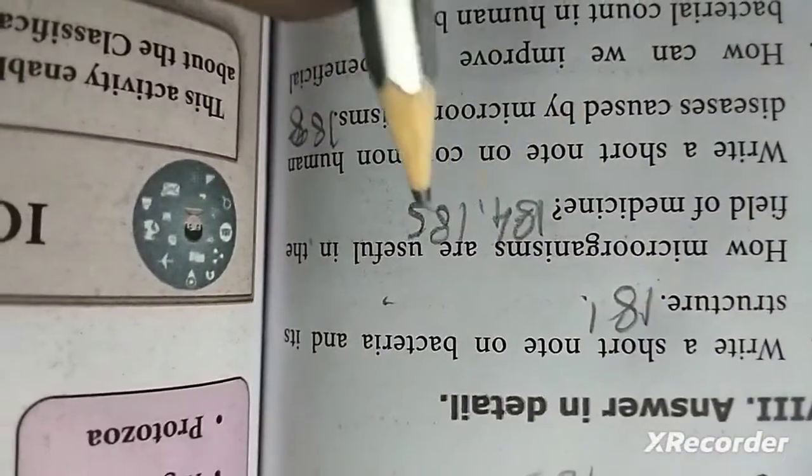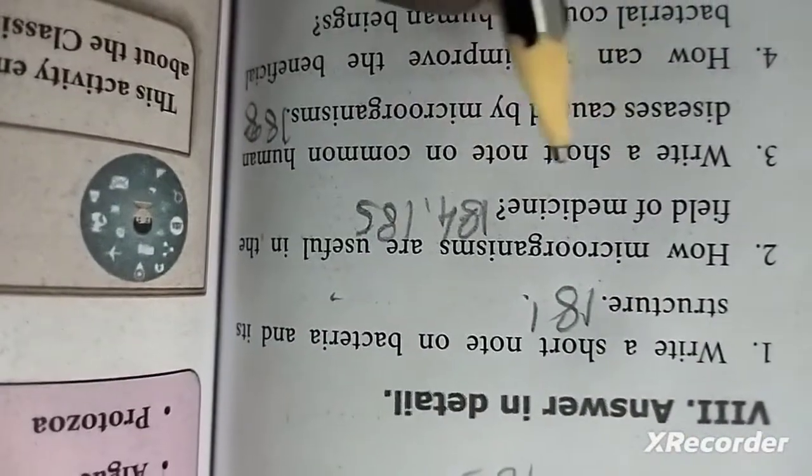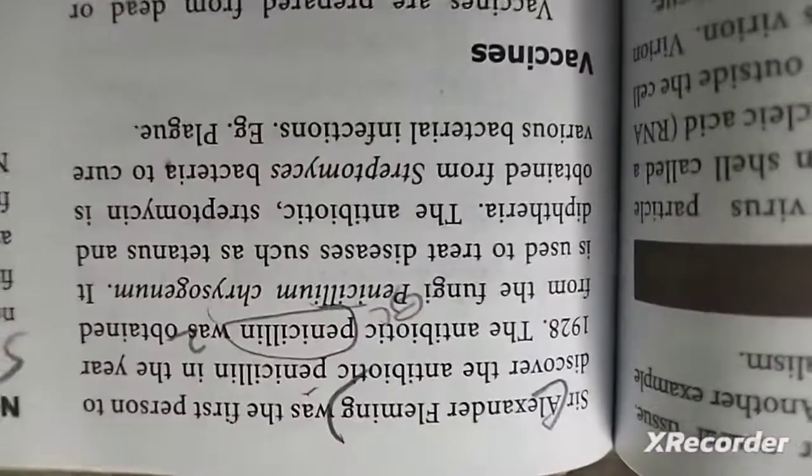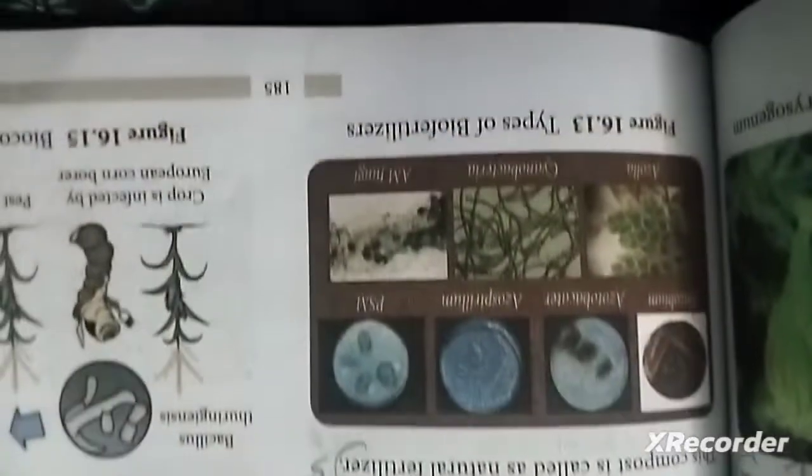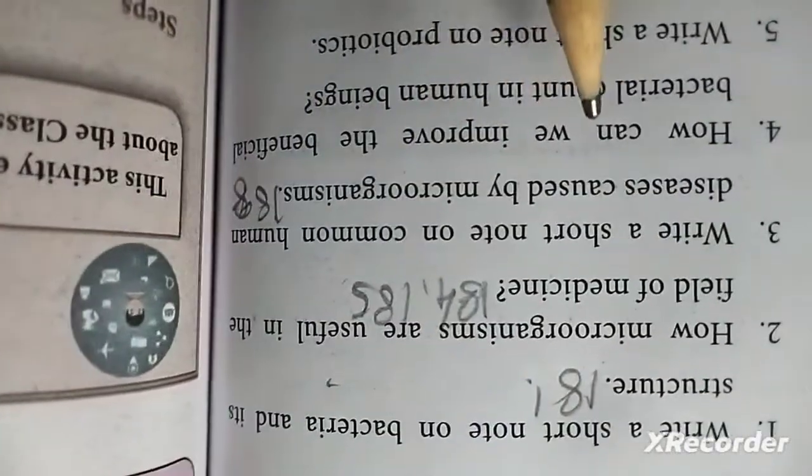Next: why are microorganisms essential for agriculture? Mark page 185. First: draw a diagram of bacteria and its structure - page 181. Second question: how are microorganisms useful in the field of medicine? Pages 184 and 185.